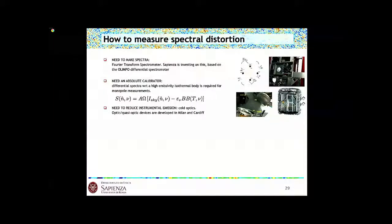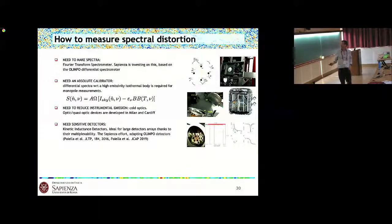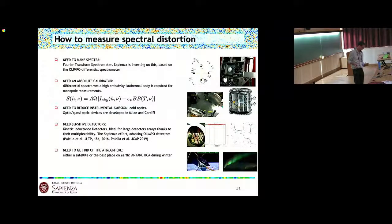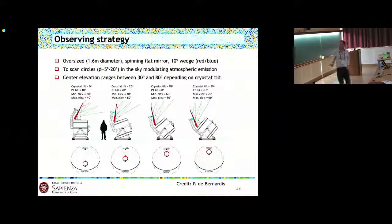The idea is that the measured spectrum will be the difference between the sky and the blackbody at its reference temperature times its emissivity. So this will have to be very well built. We're using cold optics developed in Milan and in Cardiff. The full FTS will be cold. For detectors we are planning to use the same detectors that we used for OLIMPO. This is something that is well enough under control. To get rid of the atmosphere, of course a satellite would be the best, but Antarctica is a very good place and we have access to this Italian base in the plateau which has very good quality.